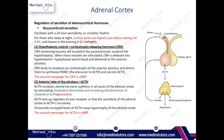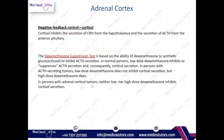The hypothalamic control: the hypothalamus creates corticotropin-releasing hormone (CRH), which acts on the anterior pituitary gland to create adrenocorticotropic hormone (ACTH). This ACTH then acts on the adrenal cortex to produce further hormones. So the axis is: hypothalamus → CRH → anterior pituitary → ACTH → adrenal cortex.